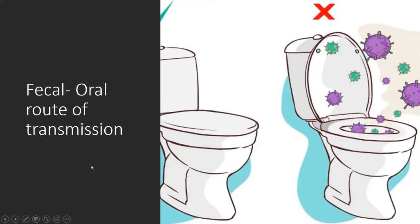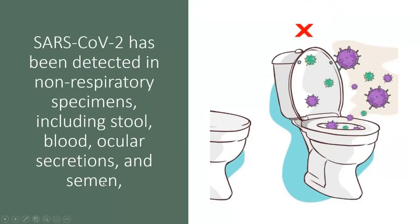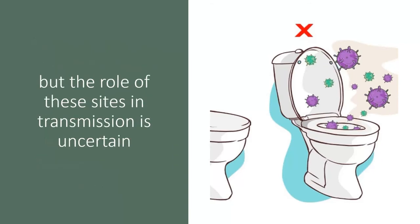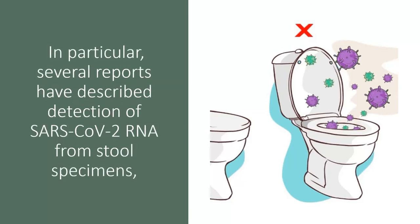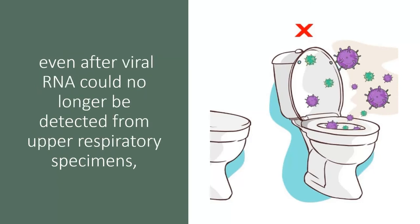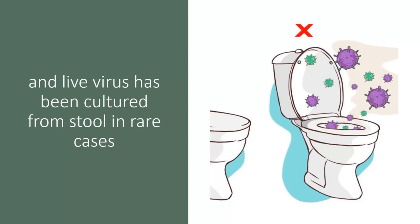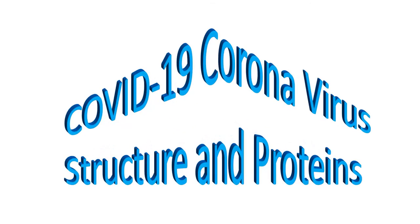Another way of spread is the fecal-oral route. SARS-CoV-2 has been detected in non-respiratory specimens, including stool, blood, ocular secretions, and semen, but the role of these sites in transmission is uncertain. Several reports have described detection of SARS-CoV-2 RNA from stool specimens even after viral RNA could no longer be detected from upper respiratory specimens. Live virus has been captured from stool in rare cases.